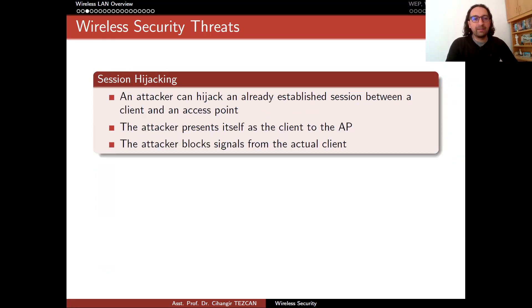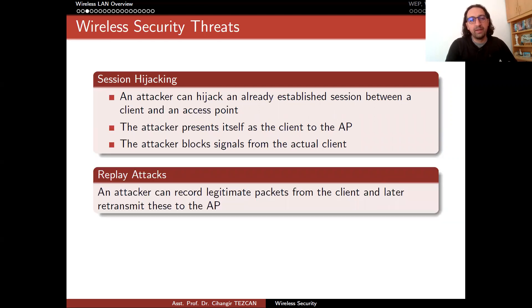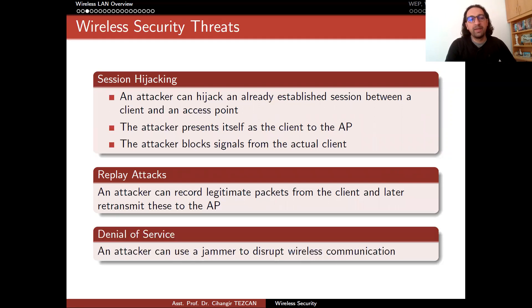Another threat is session hijacking. An attacker can hijack an already established session between a client and an access point — the attacker presents itself as the client and blocks signals from the actual client. Replay attacks are also possible: an attacker can record legitimate packets from the client and later retransmit these to the access point. Finally, a denial of service attack can be performed using a jammer to disrupt wireless communication.